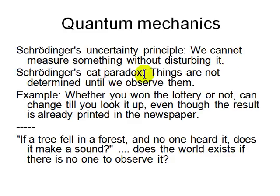Schrödinger's cat paradox says that things are not determined until we observe them — if you don't look at it, nobody really knows what's happening. Like the classic question: if a tree falls in a forest and nobody hears it, did it really fall? A real-life example: whether you won a lottery or not seems uncertain until you look it up, even if the result was already printed in a newspaper. If the lottery was decided yesterday, can it still change? This illustrates things you don't know, expecting them to change until observed. And if no one observes the world — did it exist a billion years ago with no one to hear it?